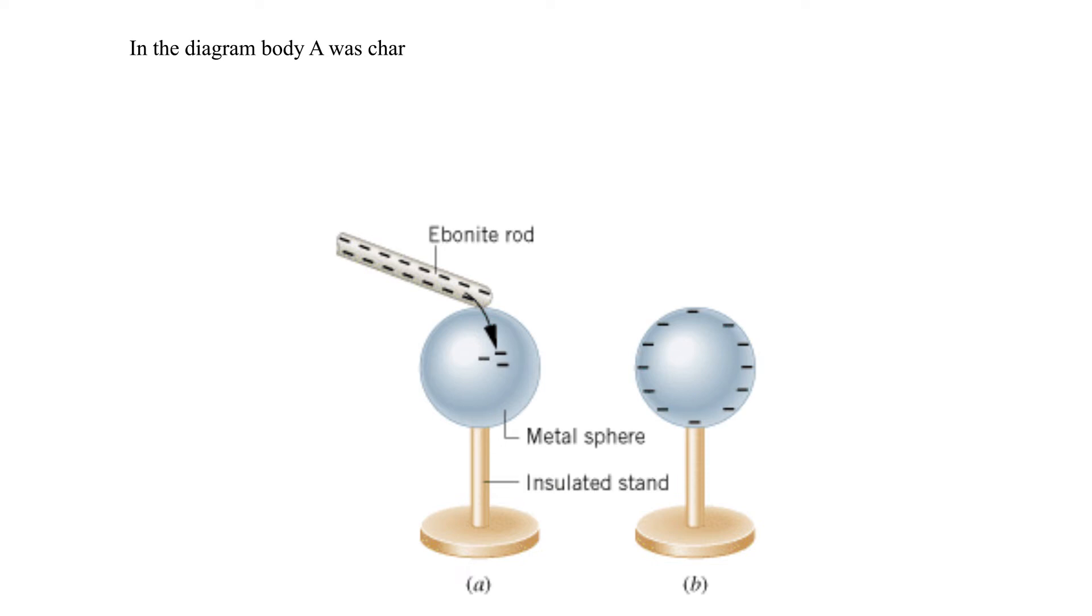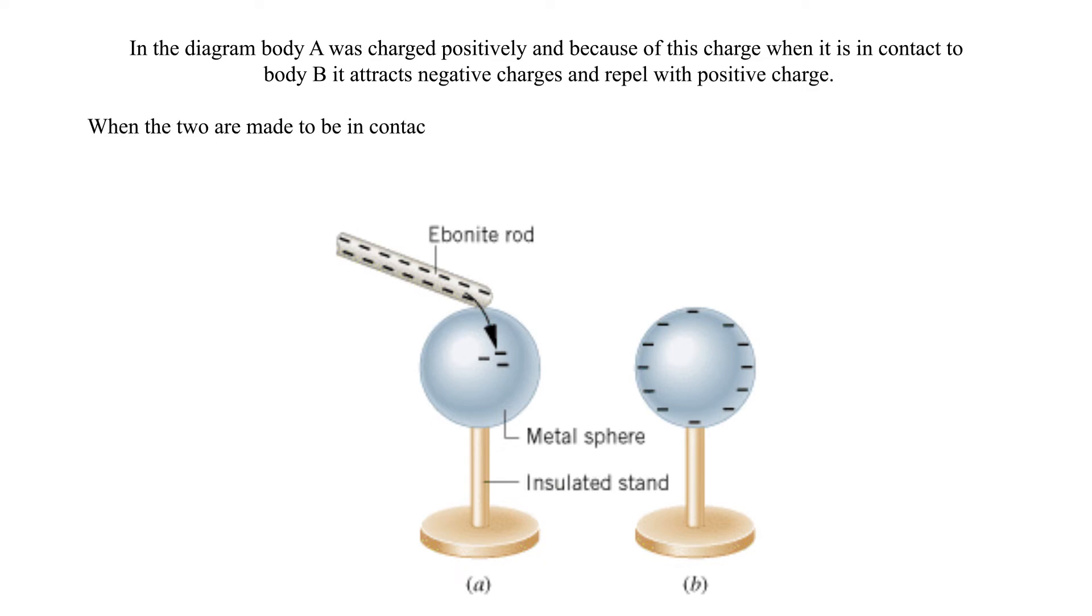In the diagram, body A was charged positively and because of this charge when it is in contact to body B it attracts negative charges and repels positive charge. When the two are made to be in contact, the negative charge in body B crosses to body A to neutralize part of its positive charge.